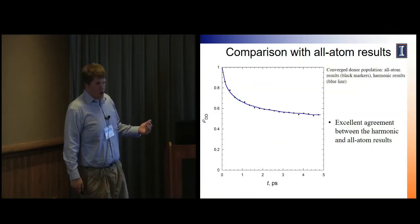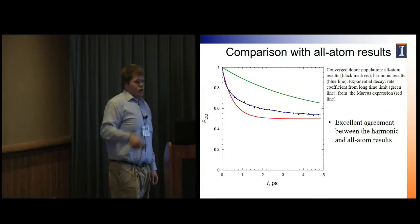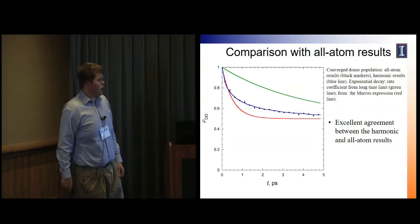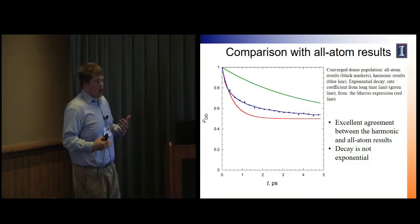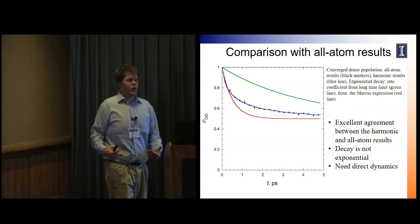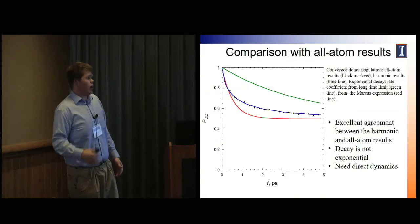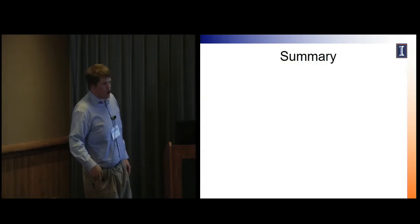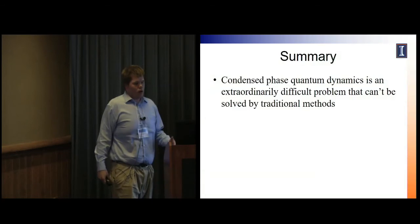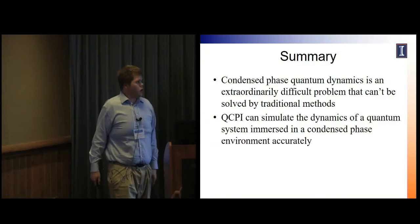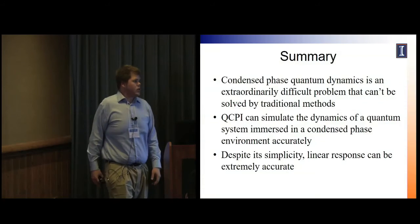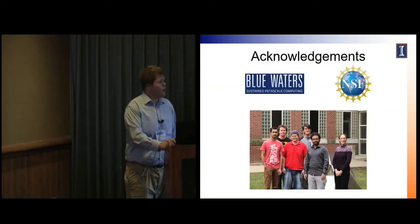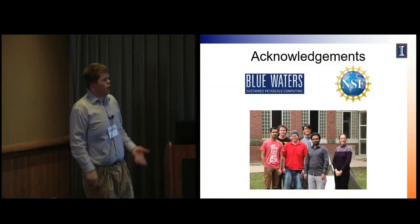Additionally, we can calculate the rates. The red line is what you'd get from Marcus theory, and the green line is the long-time limit from the actual dynamics. The decay is really not exponential, and you really need to simulate the full dynamics to get a sense of what's going on — you can't just do a long-time limit calculation or Marcus theory. In summary, condensed-phase quantum dynamics is a difficult problem but solvable with QCPI, and despite its simplicity, linear response is really powerful in this case. Acknowledgments to the group, Blue Waters, and NSF for funding.